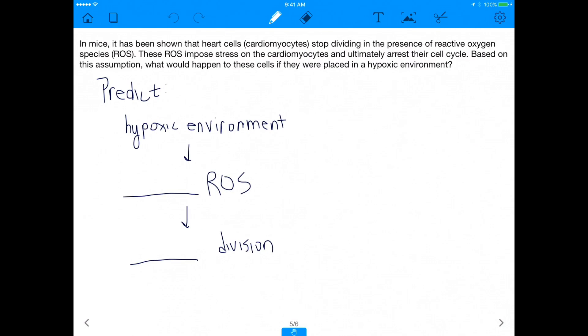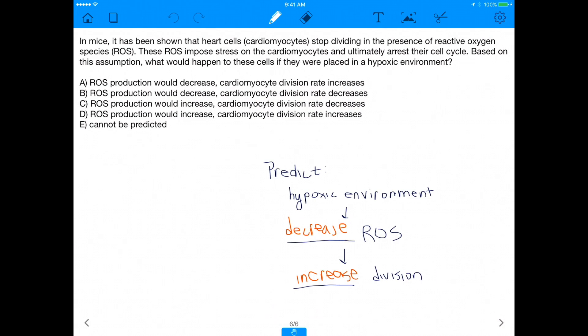And so now if we predict what's going to happen as a result of a hypoxic environment, you could predict that you're going to get a decrease in reactive oxygen species and an increase in division, right? Because if you have a decrease in reactive oxygen species, you'd increase division rate. And therefore, the answer here, the answer here that matches is A.